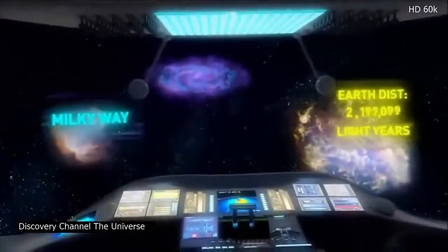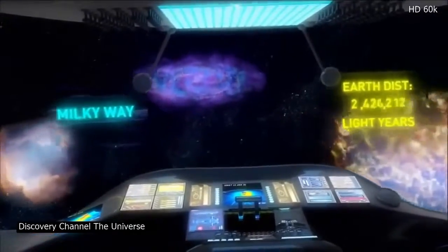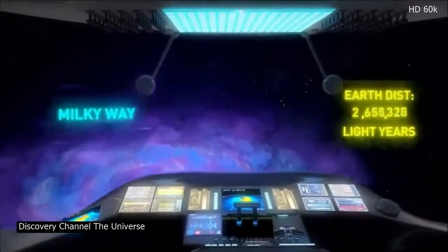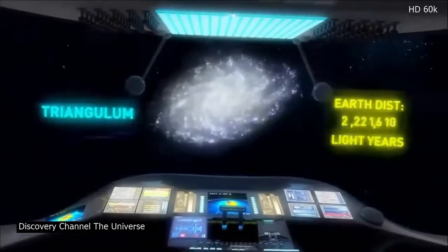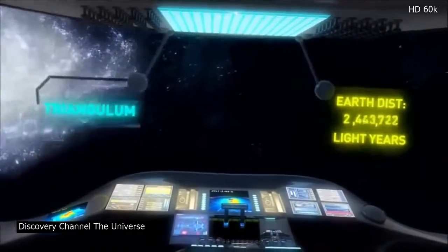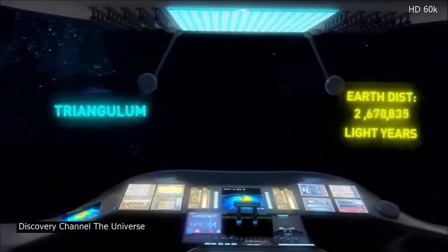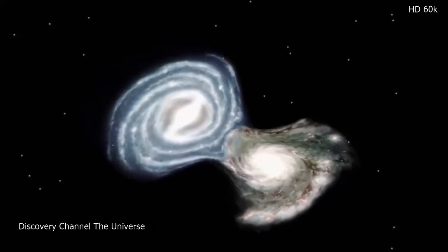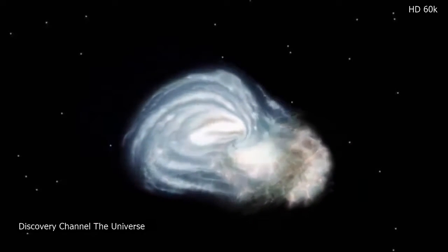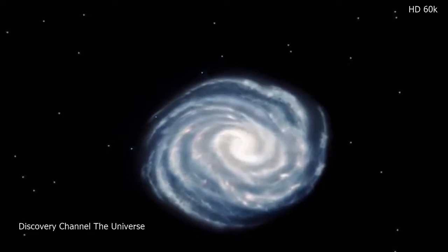Our galaxy's home cluster is called the local group. A trip across 3 million light years takes us past its two big members the Milky Way and M31 the Andromeda galaxy. The Triangulum galaxy is the next largest and a few dozen dwarf galaxies circulate among them. The galaxies within an individual cluster tend to gradually merge with time. So in the next 4, 5, 6 billion years our Milky Way galaxy is going to merge with the Andromeda galaxy.